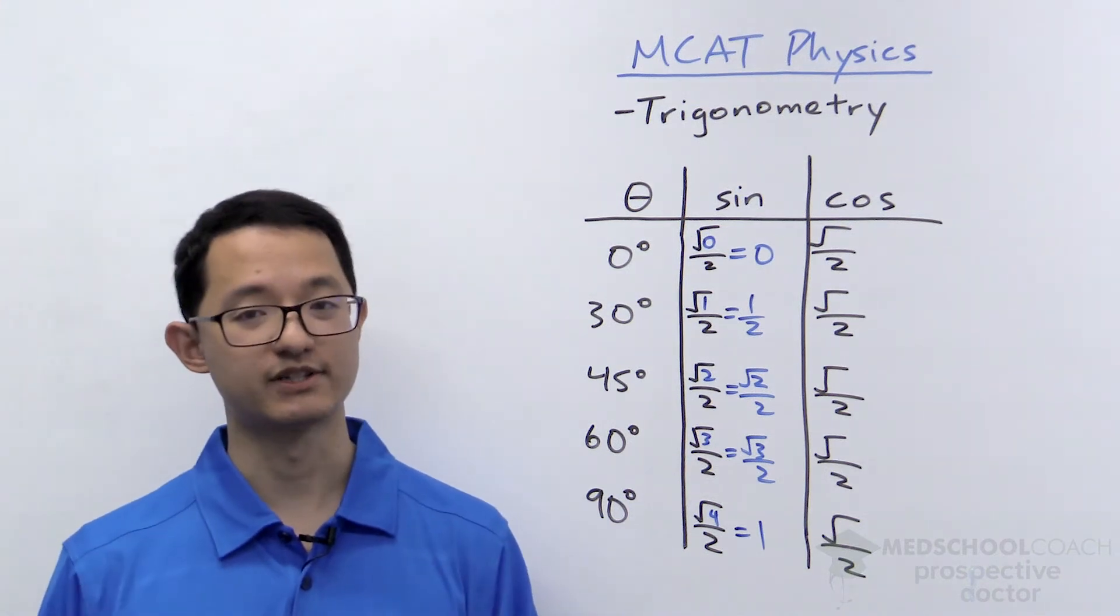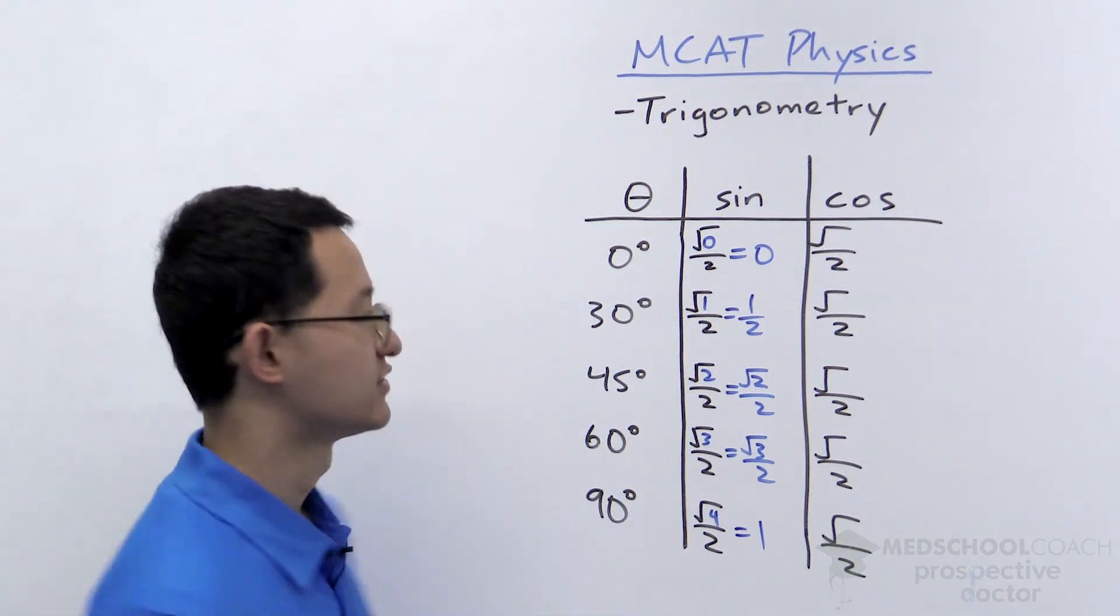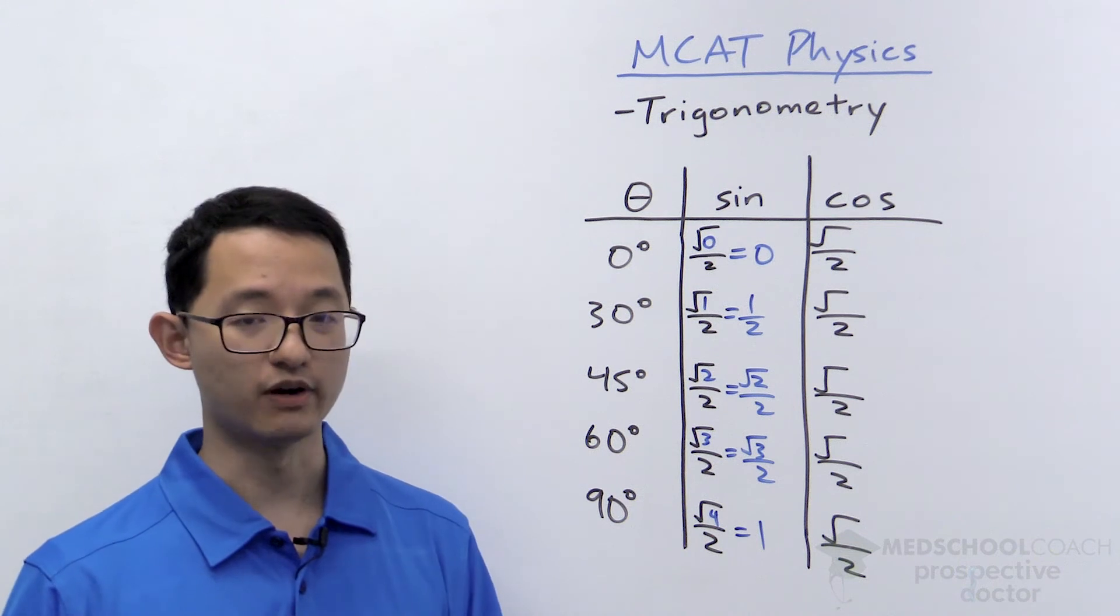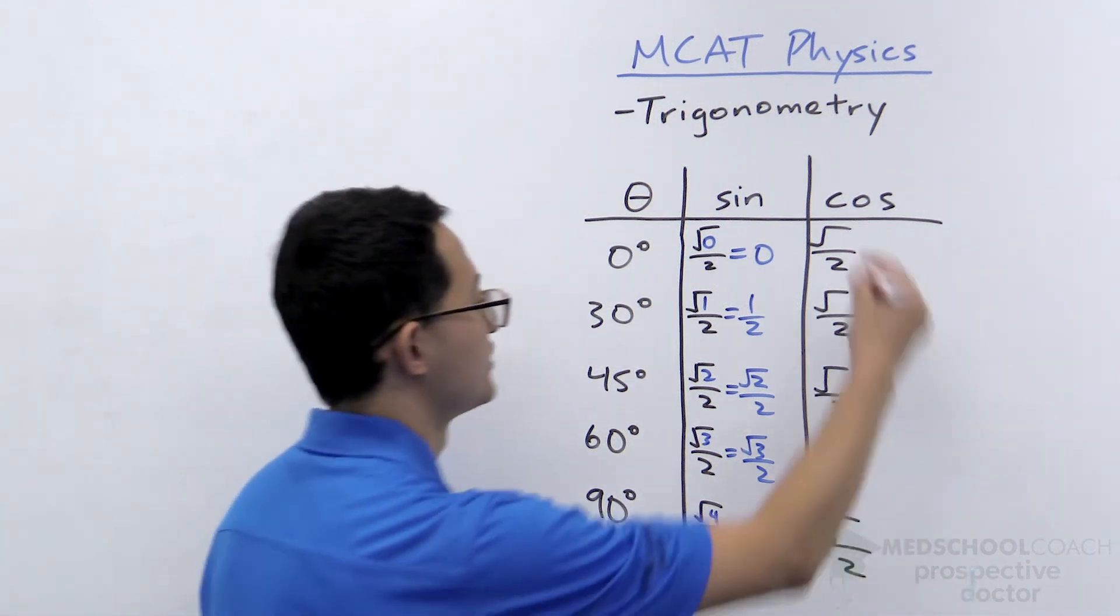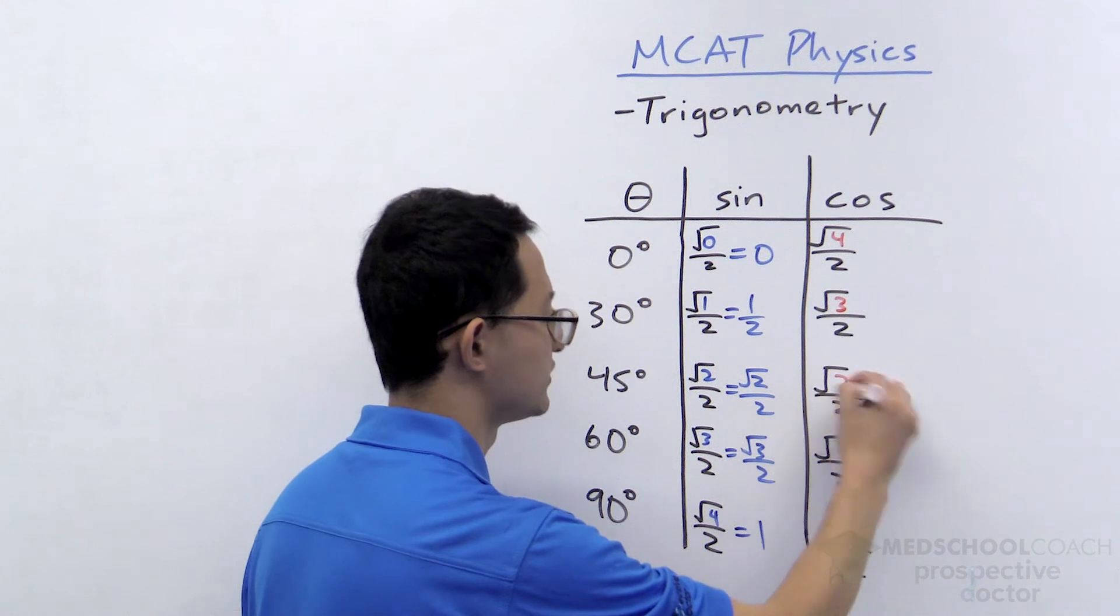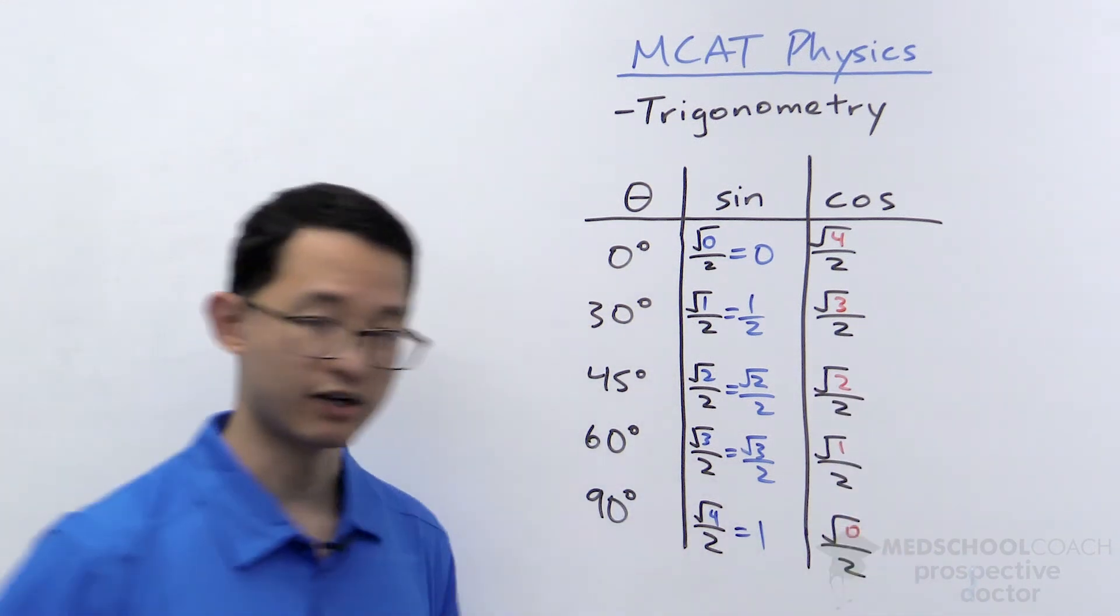For cosine, we know it's the opposite of sine. So instead of counting to 4, you're going to count backwards. So we're going to go 4, 3, 2, 1, 0.